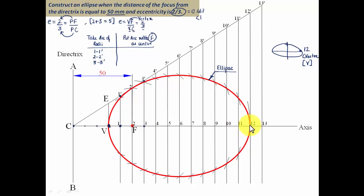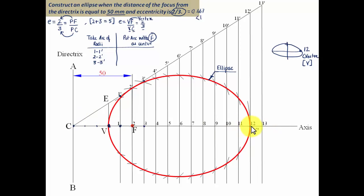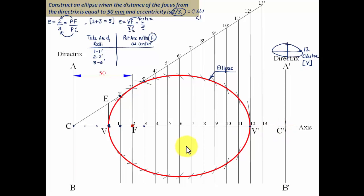Label the right-hand vertex as V-dash. Just as there is a directrix to the left of V at a distance of 30 millimeters, there is also a directrix to the right of V-dash at 30 millimeters. Keep one compass leg at C and the other at V, then with V-dash as center cut an arc and draw the second directrix A-dash B-dash, with its reference point C-dash.